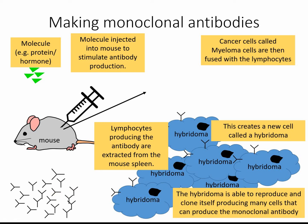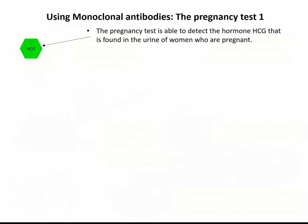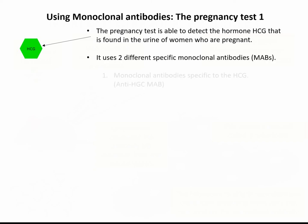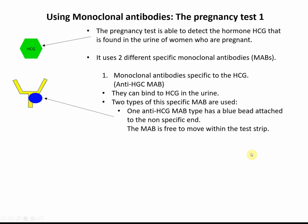Now let's look at how we use monoclonal antibodies in the pregnancy test. In pregnancy testing, when a woman is pregnant, a hormone called HCG — human chorionic gonadotrophin, we just call it HCG — is produced, and some of it comes out in the urine. This is what we're going to test for. HCG will have been injected into the mouse to make it produce antibodies against it. We then have a specific monoclonal antibody — MAb — that is specific to HCG.